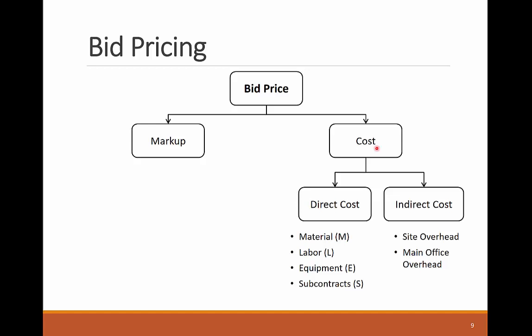Cost refers to the actual expense that the contractor pays to finish the work, and it includes direct and indirect cost. Direct cost is any expense you can directly associate to a single activity or work package, including material, labor, equipment, and subcontractors. For example, the material cost of structural concrete can be the ready-mix concrete you pour; its labor cost includes the crew that places the concrete; its equipment cost includes the concrete pump; and the subcontractor cost can include the rebar and formwork done by a specialty contractor.